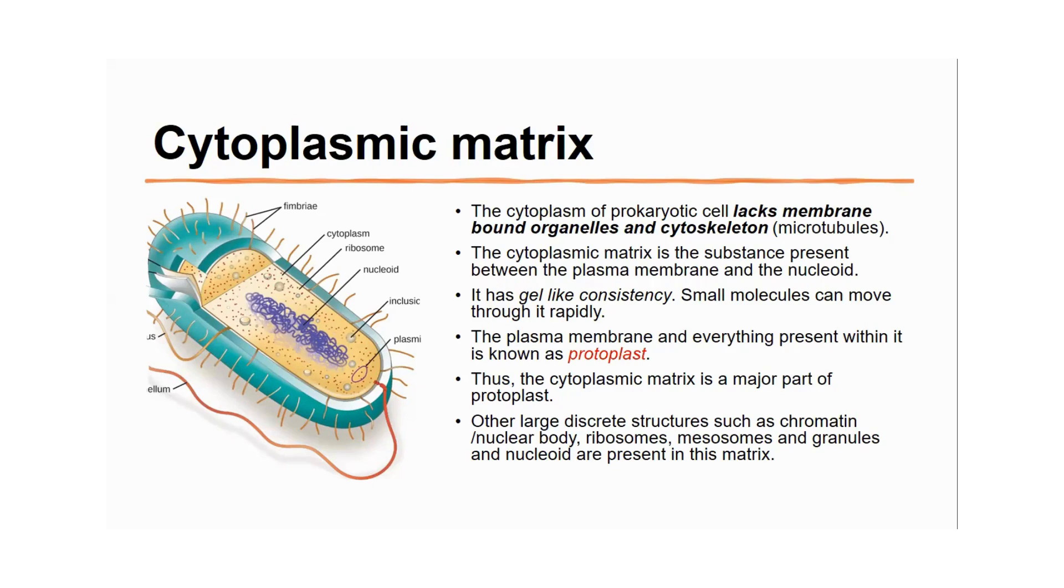The cytoplasm of prokaryotic cells lacks membrane-bound organelles and cytoskeleton macrotubules. The cytoplasmic matrix is the substance present between the plasma membrane and the nucleoid. It has a gel-like consistency, and small molecules can move through it rapidly.